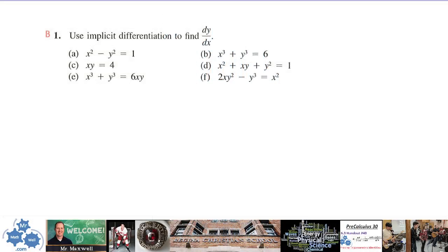Alright, 2.7 implicit differentiation — here are some homework examples. For number one, remember that implicit means we do not have to isolate for y first. That's really nice because in some of these it's really ugly with y appearing multiple times. Isolating y explicitly in terms of x is almost impossible, so let's just take it as it is.